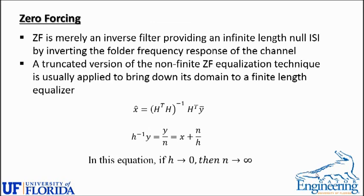We move on to the different equalization techniques applied in V-BLAST MIMO. First is zero forcing, which is an inverse filter providing infinite-length null ISI by inverting the folder frequencies from the channel. A truncated version of the non-infinite zero forcing equalization is applied to bring its domain to a finite-length equalizer. The estimation formula for zero forcing is X-hat equals H-transpose times (H H-transpose) inverse times Y-bar, where H is the channel matrix and T denotes the transpose. If the channel matrix H tends to zero, the noise goes to infinity — which is a big disadvantage of zero forcing.